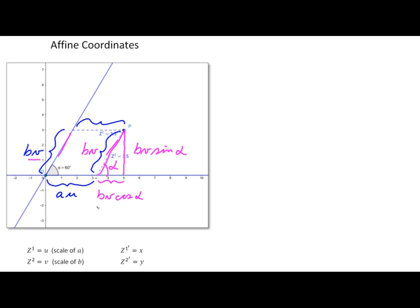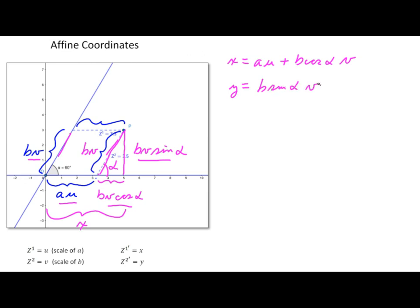The transformation works out as follows. The x value is the total Euclidean distance along the x-axis: x equals au plus b cosine alpha times v. For y, it's simply the perpendicular height: y equals b sine alpha times v. These two equations give the transformation from uv to xy.